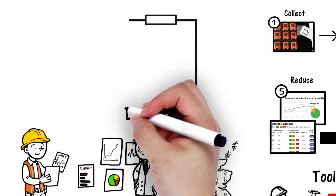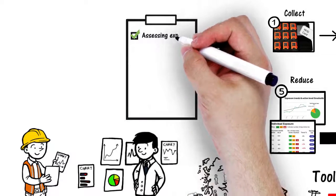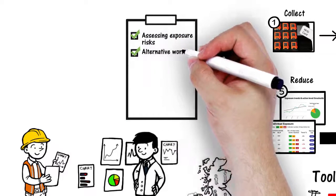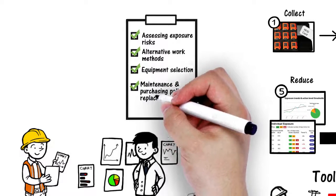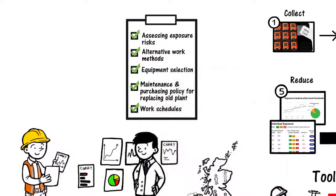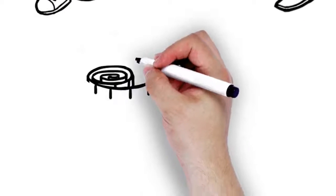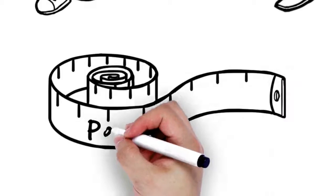The reports help with HSE compliance by assessing exposure risks, alternative work methods, equipment selection, maintenance and purchasing policy for replacing old plant, work schedules, and importantly, to measure the effectiveness of controls to aid design changes.